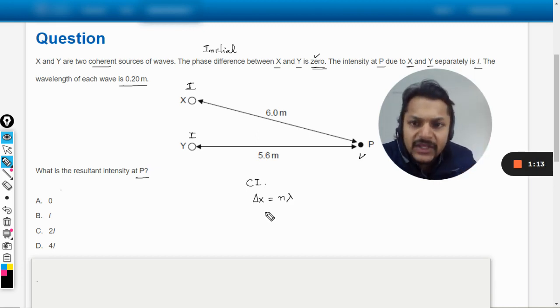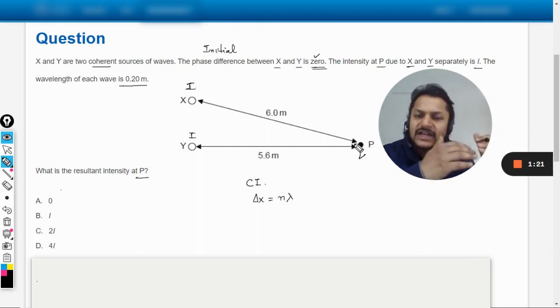The path difference should be equal to nλ. I'll write path difference as delta X. So the path difference is literally the path traveled by this wave minus the path traveled by this wave. From there we will find the number of wavelengths that have been crossed over and whether the crest of one is overlapping the crest of the other or not, whether the crest of one is coming on to the top of trough.